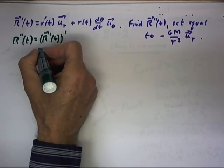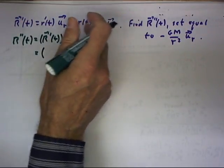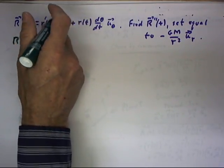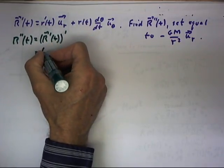So the first step is going to be express r double prime of t as r prime of t prime. I'm going to suppress the t notation, the function notation.